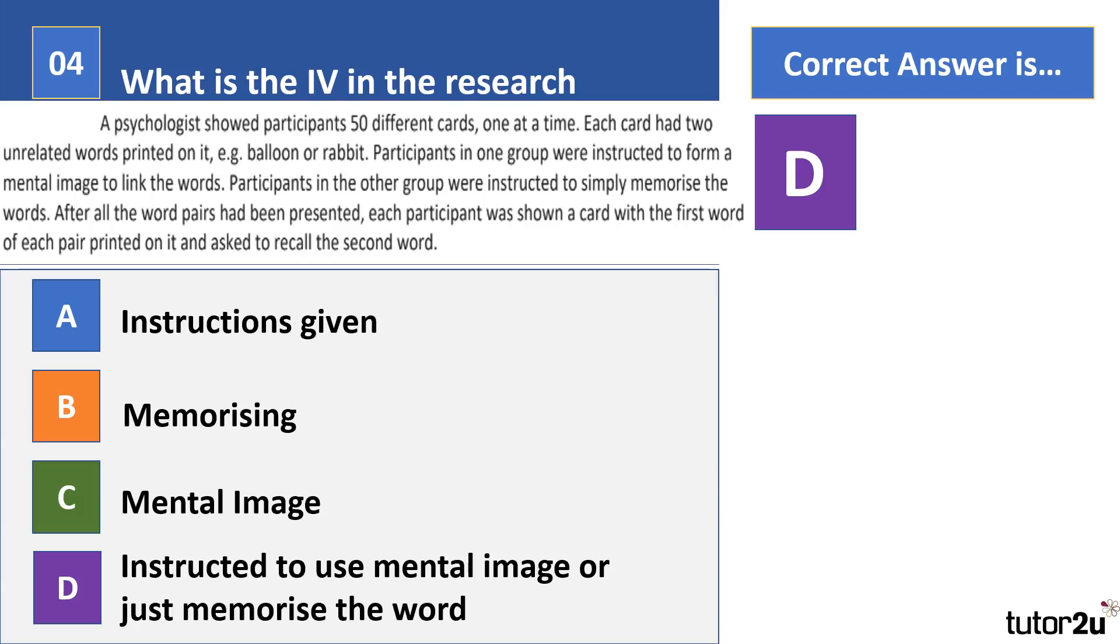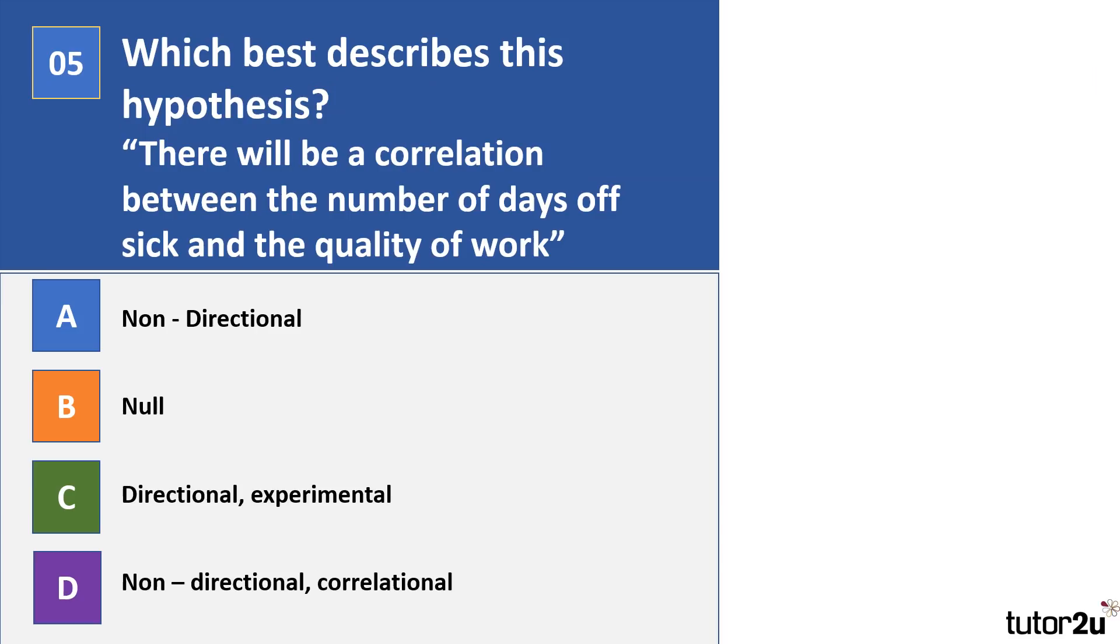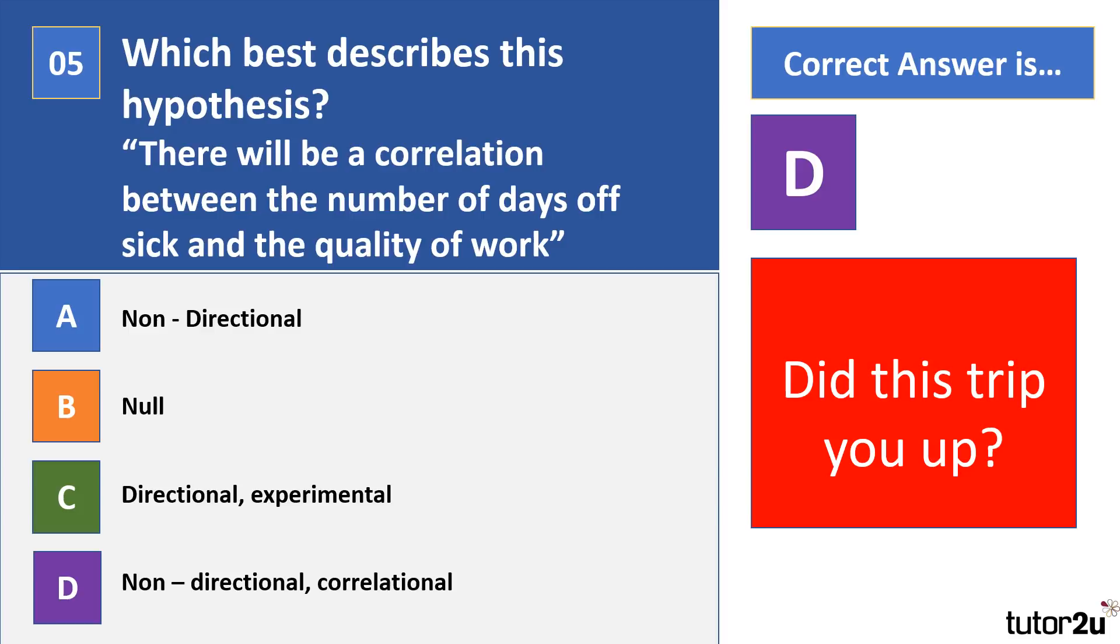Five: Which best describes this hypothesis? So have a read through. I want to know the best description of it from that given there. All right, your correct answer there is D, non-directional correlational.